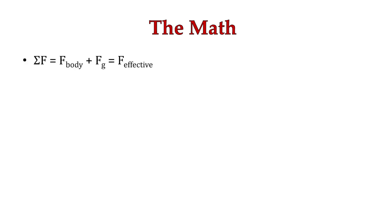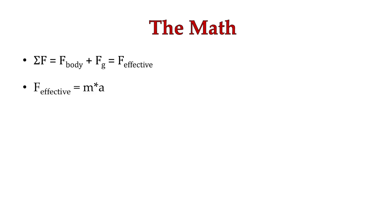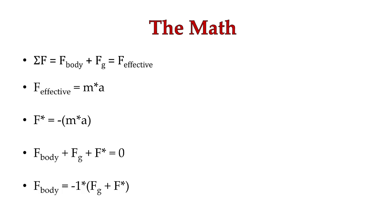Now let's take a look at the math. We know that the sum of the forces is going to equal the effective force. In this particular case we have the force of the body — the force the body is producing on that barbell — plus the force due to gravity. Note the sign for the force due to gravity: here it is positive because I am going to denote the negative value in my inputs. We know the effective force equals mass times acceleration. The inertial force is then equal to negative one times the mass times the acceleration. D'Alembert's principle tells us the force of the body on the barbell, plus the force due to gravity, plus the inertial force is all going to be equal to zero. Finally, the force the body has to produce on that barbell or dumbbell is going to be negative one times the force due to gravity plus the inertial force.